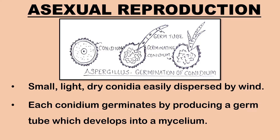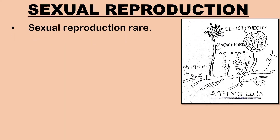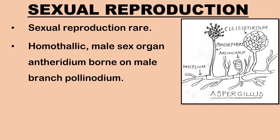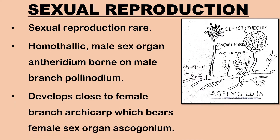On reaching a suitable substratum, each conidium germinates by producing a germ tube which develops into a mycelium. Next, let us study about sexual reproduction in Aspergillus. Sexual reproduction in Aspergillus is rare. Aspergillus is homothallic. The main sex organ is the antheridium, borne on the male branch polynodium, and it develops close to the female branch archicarp, which bears the female sex organ ascogonium.